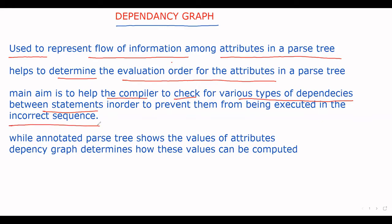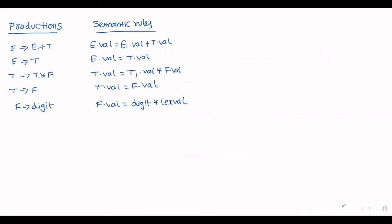This is done to prevent incorrect execution order — to maintain the correct sequence of execution. Simply, the annotated parse tree shows the values of attributes at each and every node. But a dependency graph determines how these values are computed. In straightforward notation, the dependency graph specifies the evaluation order in which the attributes are executed to get the final results.